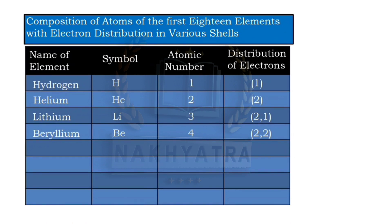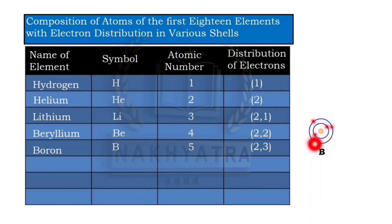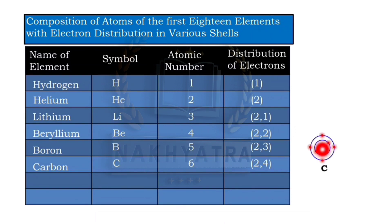The fourth element, beryllium, has electron distribution 2,2 — the first two electrons in the first shell and two in the second shell. Boron has atomic number 5 with distribution 2,3 — two electrons in the first shell and three in the second. Carbon has atomic number 6 with distribution 2,4 — two electrons in the first shell and four in the second shell.